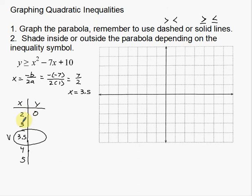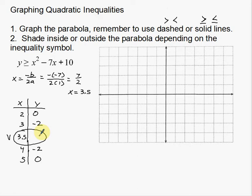I've already worked out the y-coordinates. For x = 2, y = 0. For x = 3, y = negative 2. For x = 4, y = negative 2. For x = 5, y = 0. To find these y-coordinates, take each x value, plug it into the function, and whatever you get is your y. For the vertex at x = 3.5, plugging in gives negative 2.25. So the vertex is at (3.5, negative 2.25).